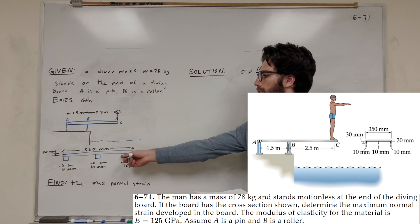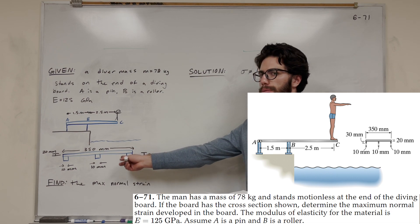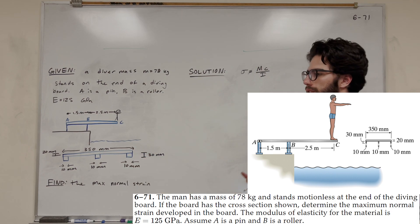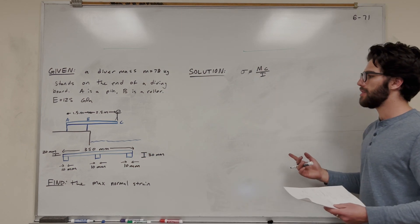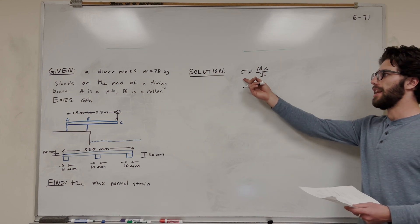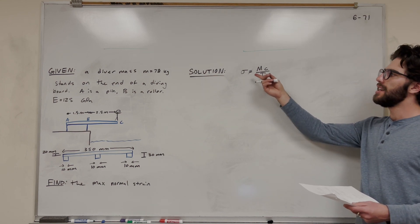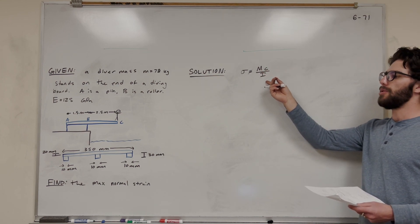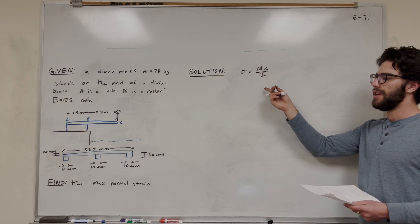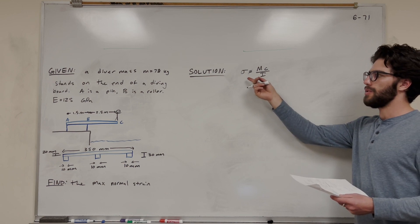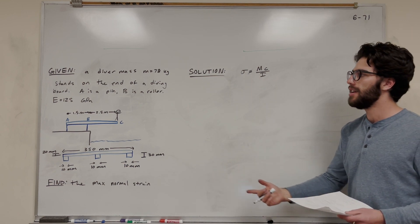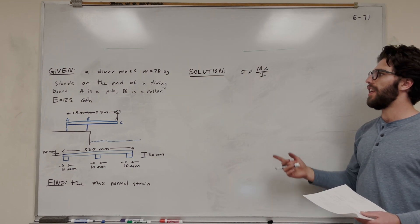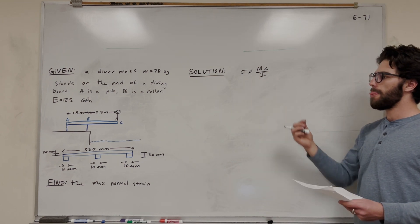We're also given a cross-section of a diving board. To do this, we're going to be using this equation: the bending stress is equal to moment times radius over the moment of inertia. Then we're going to use the stress to find strain. So first, let's find stress.